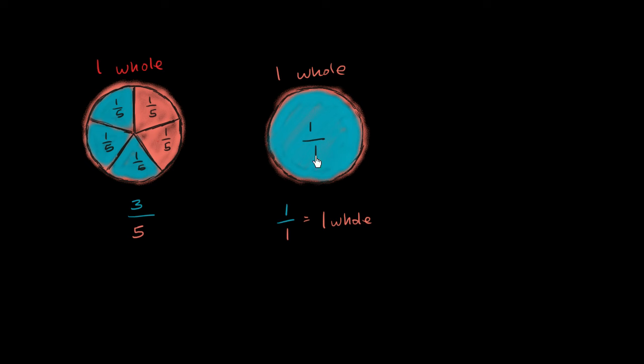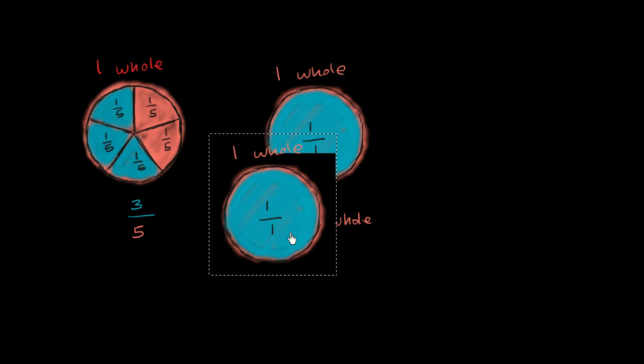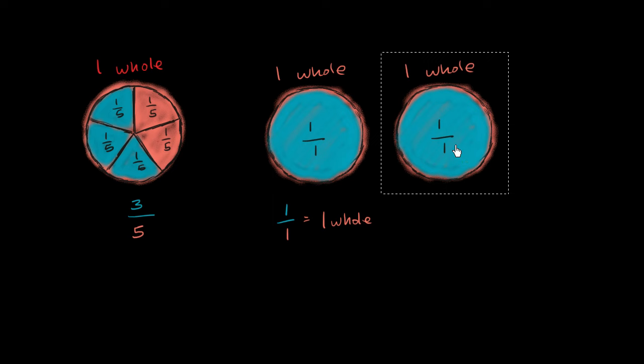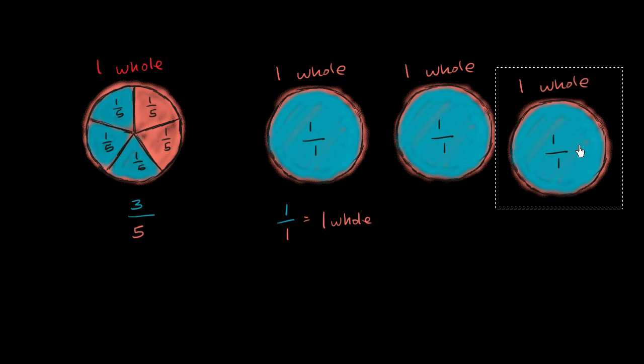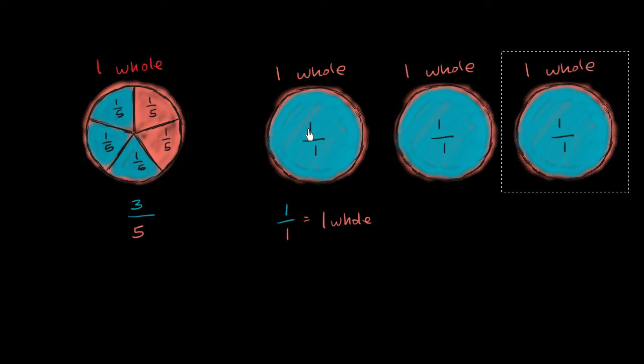Now what happens if we were to do this multiple times? Let me copy and paste that. So now I have another 1 whole, and then another 1 whole right over here. So now, in total, how many wholes do I have? Well, I have three: 1, 2, 3 wholes.